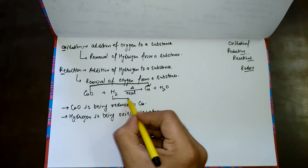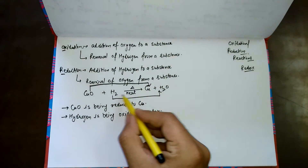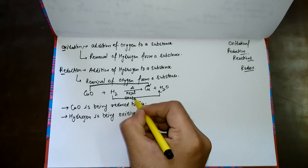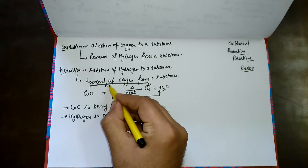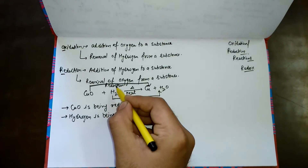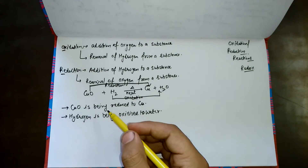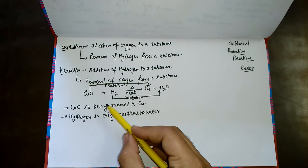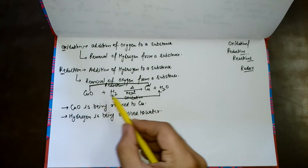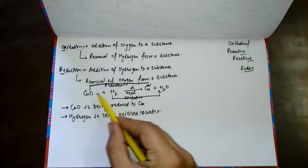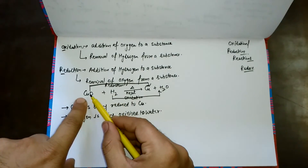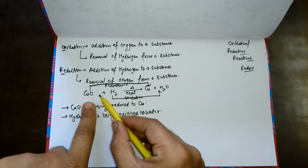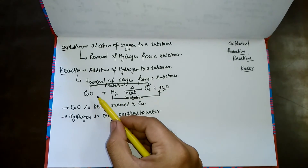So to summarize: when there is an addition of oxygen we call it oxidation, and when there is a removal of oxygen we call it reduction. Importantly, copper oxide is giving its oxygen to the hydrogen. On the reactant side oxygen is with copper, but on the product side copper is alone — it means copper oxide has given oxygen to hydrogen, so we call copper oxide the oxidizing agent.